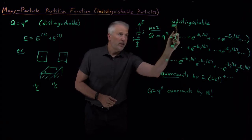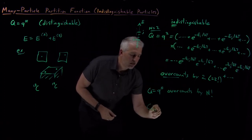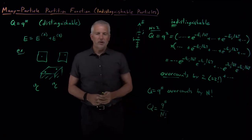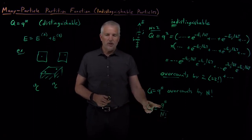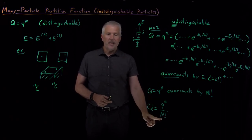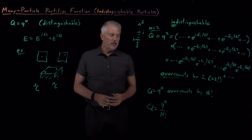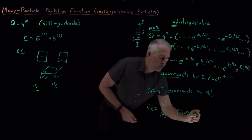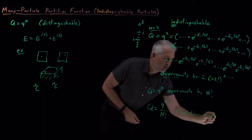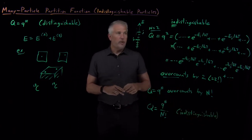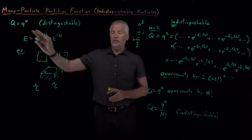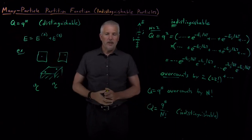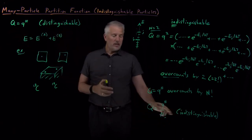So if we do have indistinguishable particles, the correct way to calculate the partition function for the whole system is the single-molecule partition function raised to the N power, divided by N! to fix this over-counting. When we have distinguishable particles, we don't need to divide by N!. The shortcut for calculating the partition function differs depending on whether the particles are distinguishable or indistinguishable.